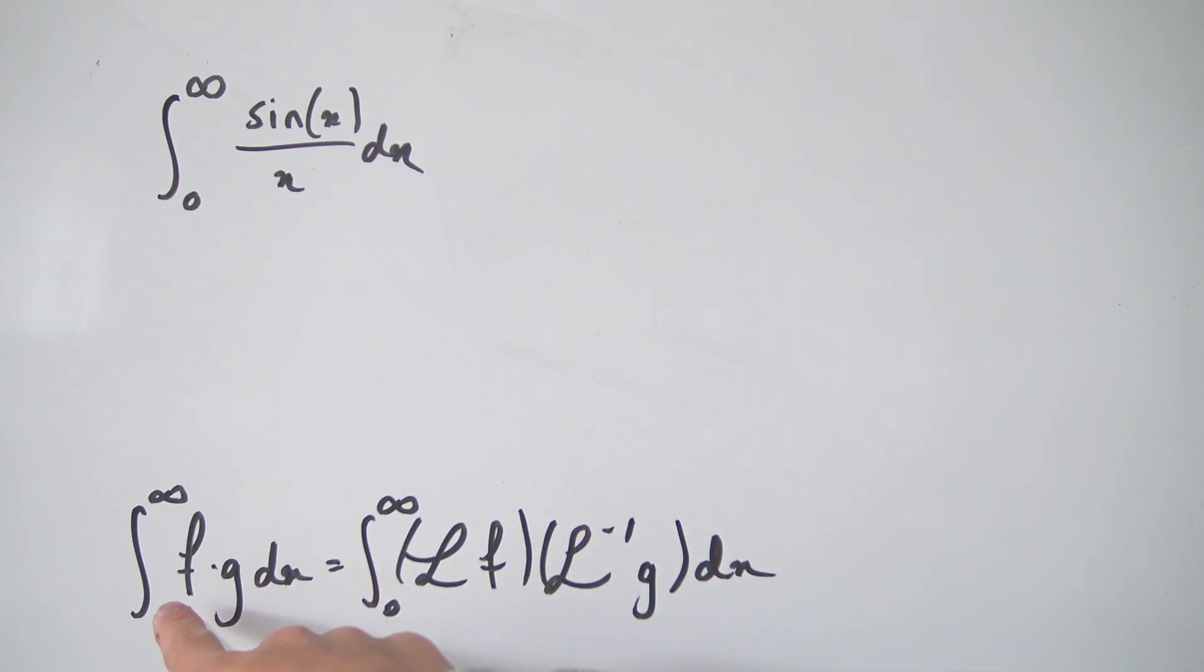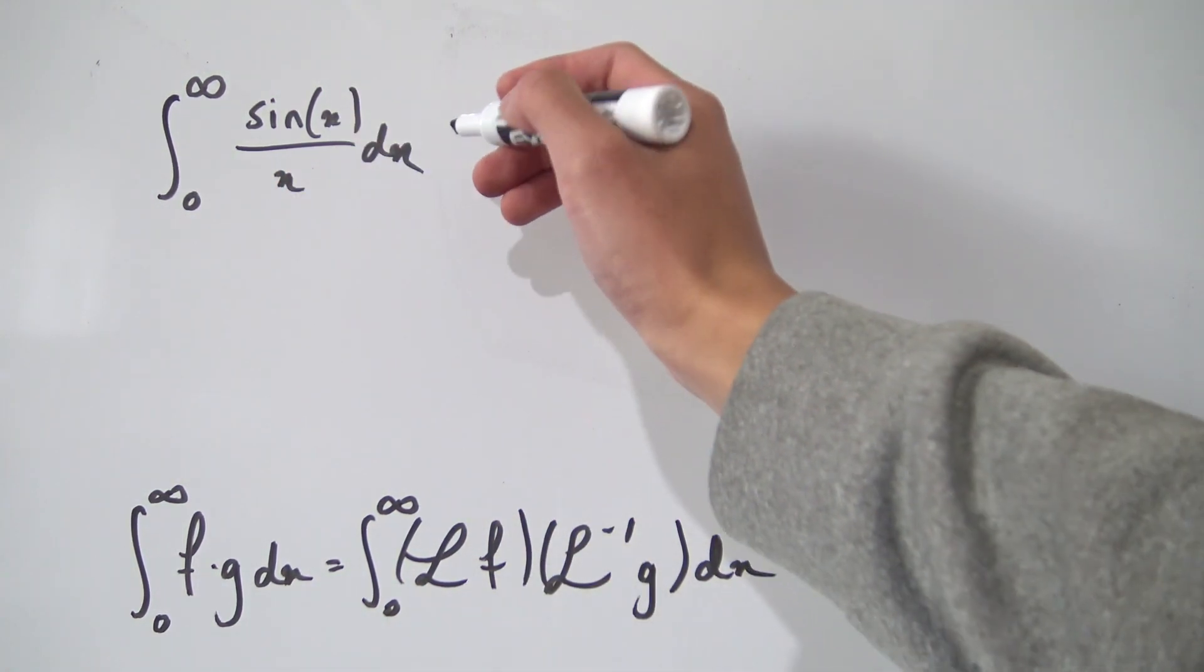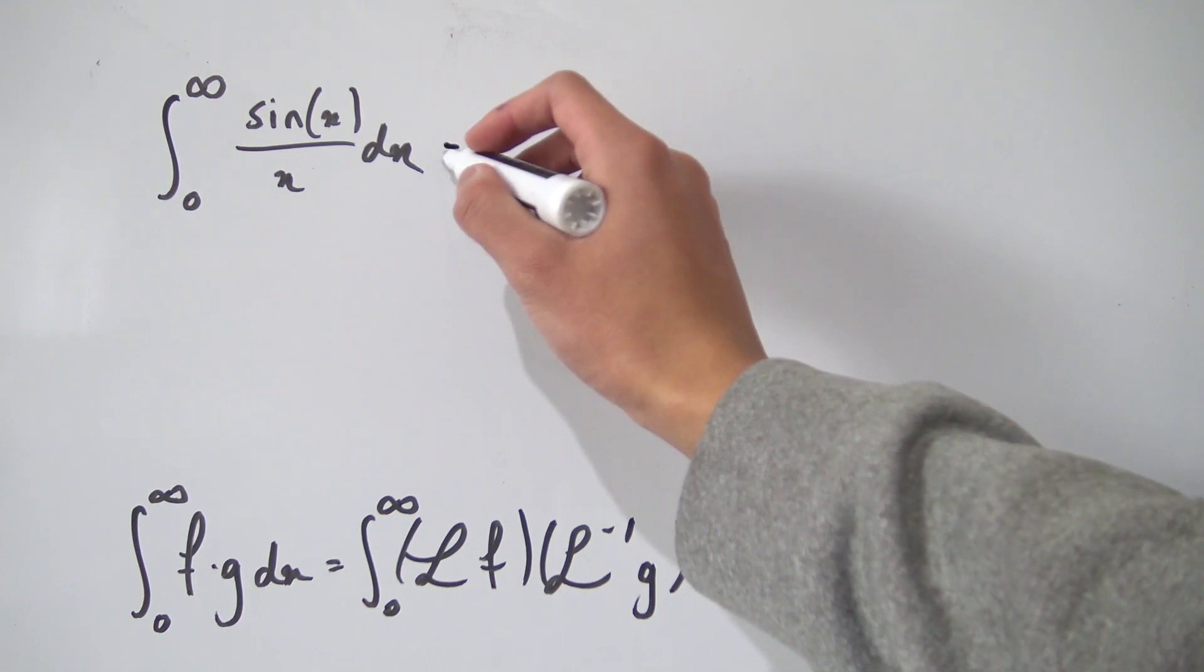First of all, we want to find an f and a g, a product of two functions. We'll just take sine of x and 1 over x in this case. This identity tells us that this integral is the same as